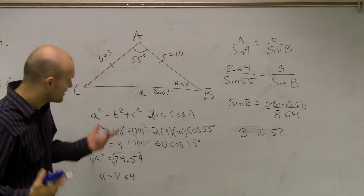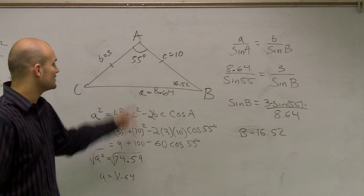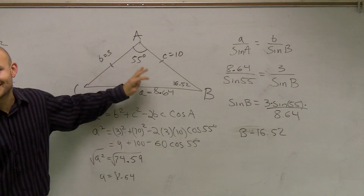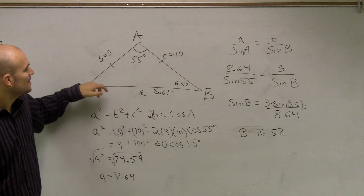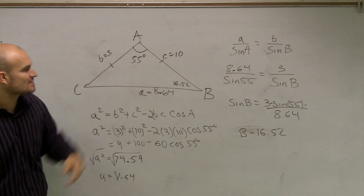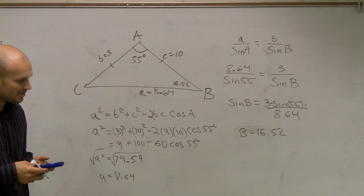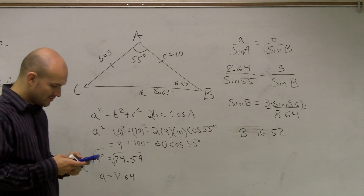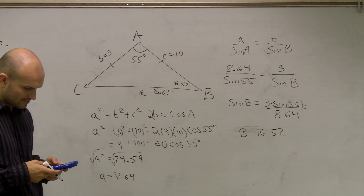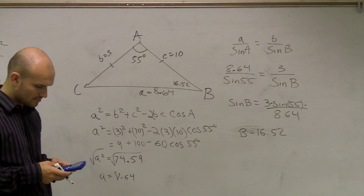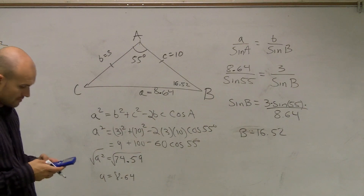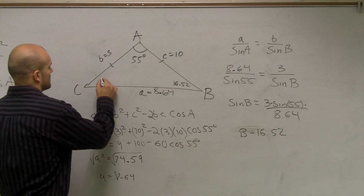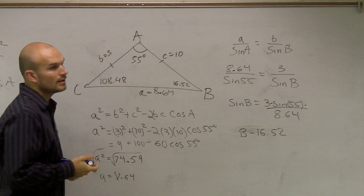Again, we can use the law of sines or law of cosines to find angle C, but since we now know our two angles, we can just add them all together — 55 plus 16.52 — and subtract that from 180, and there we go, we're done.